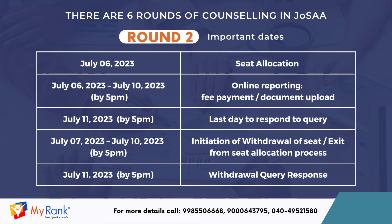For Round 2: Seat allocation July 6. Online reporting and payment July 6 to July 10. Last date to respond to queries: July 11 by 5 pm. Withdrawal of seat from July 7 to July 10 by 5 pm. Withdrawal query response July 11 by 5 pm.